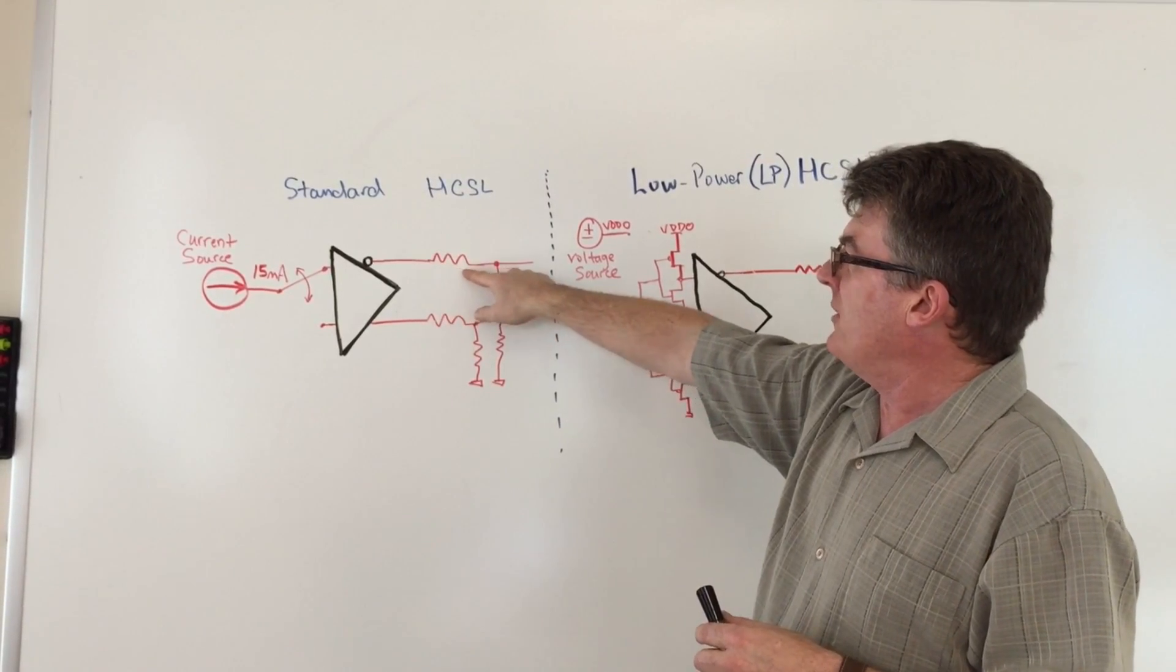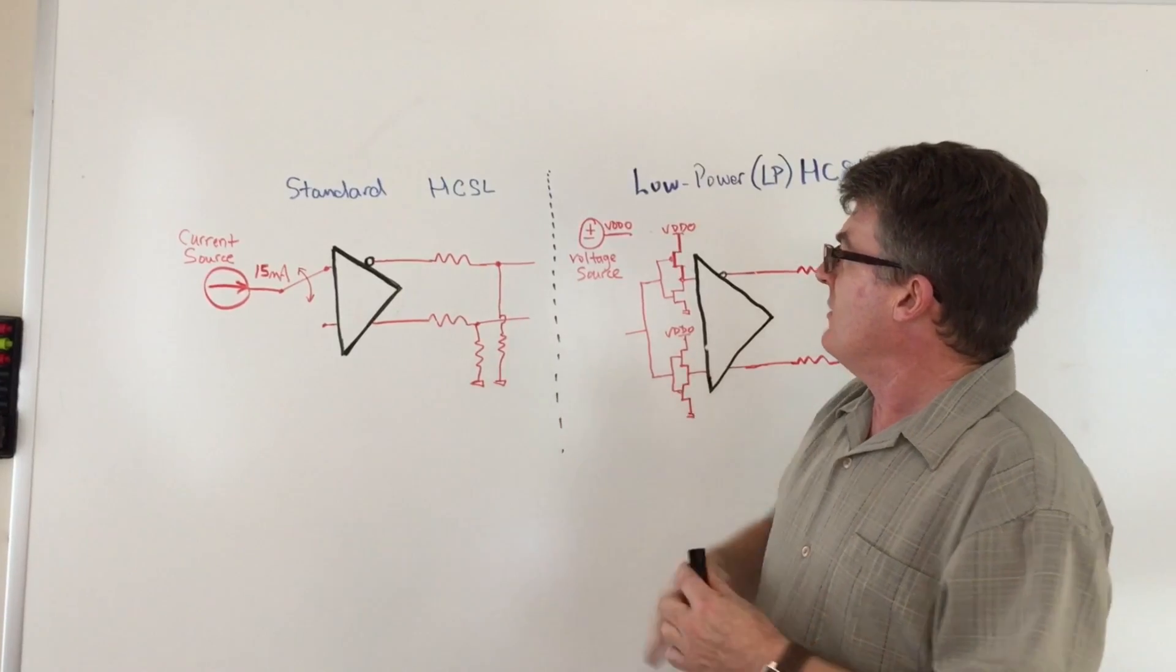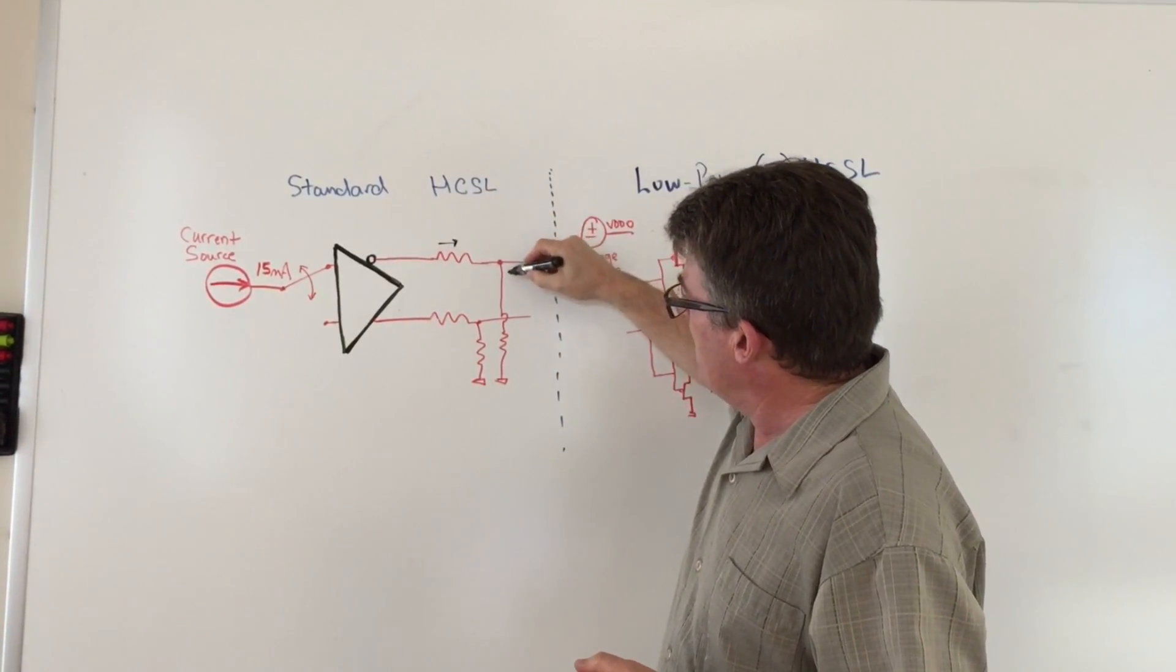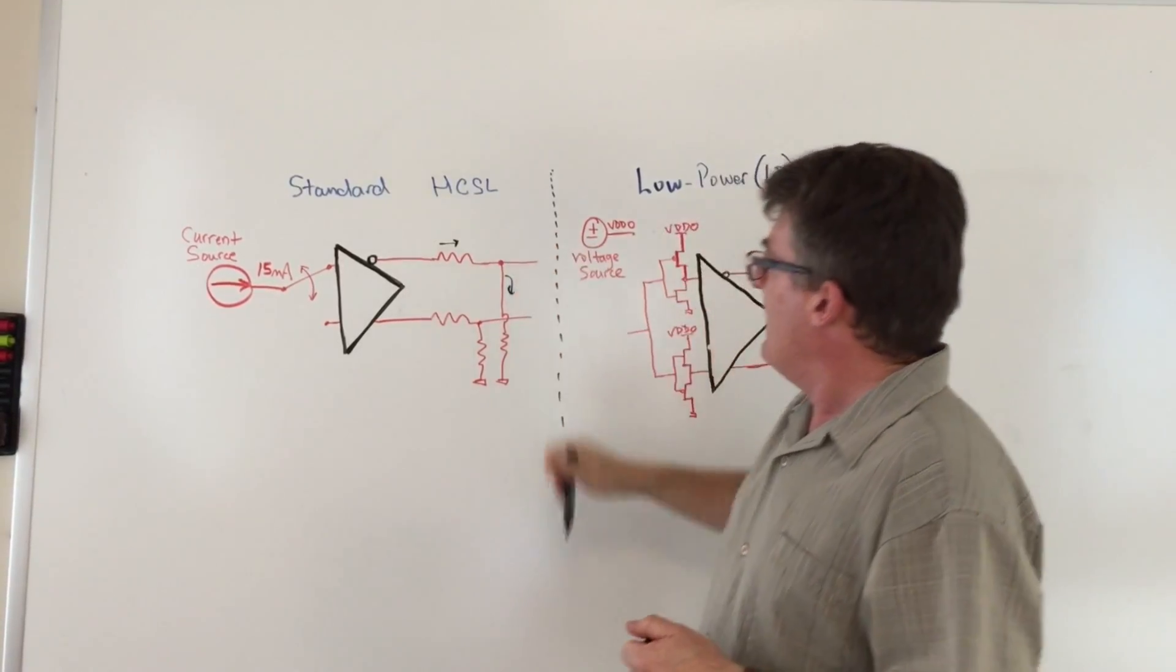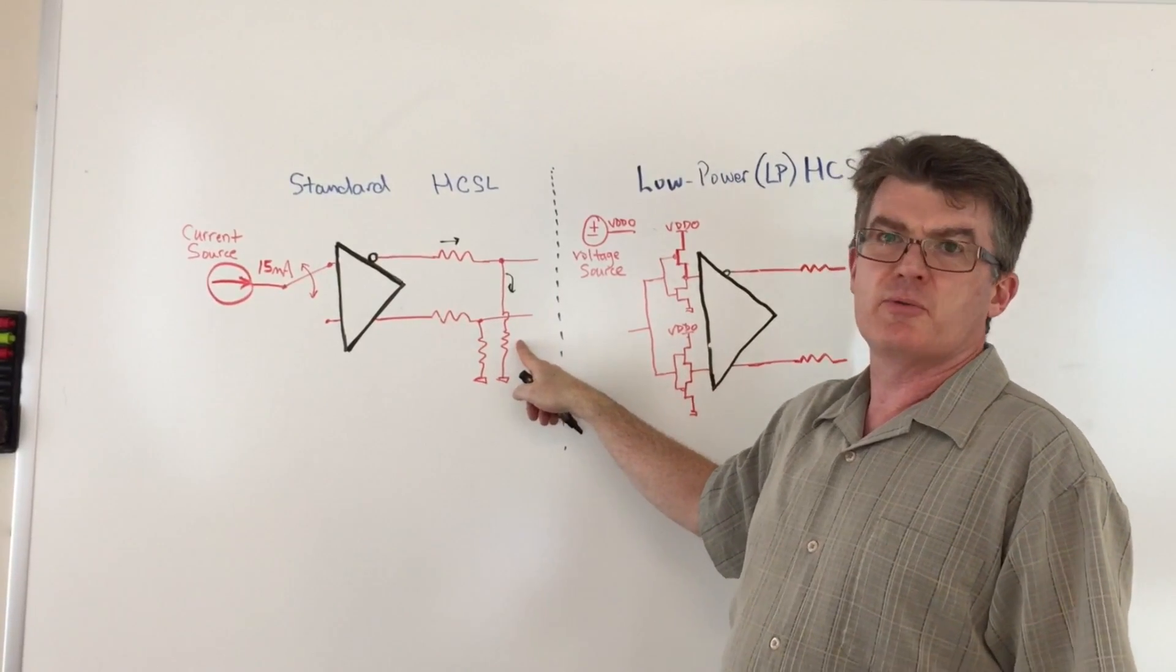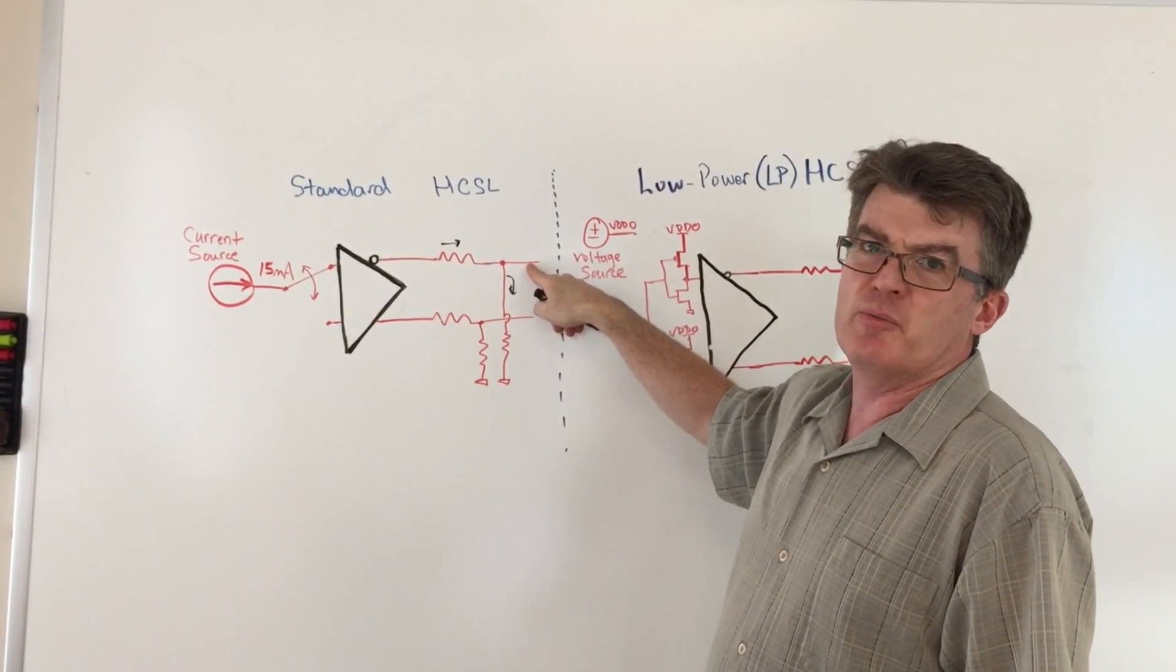in series with the output, and then it hits the pull-down resistor. You've got the current flow going this way and then this way. This 15 milliamps goes through here, which is typically 33 ohms, and then goes through this resistor, which is 49.9 ohms. The result is you get 750 millivolts on the line here.